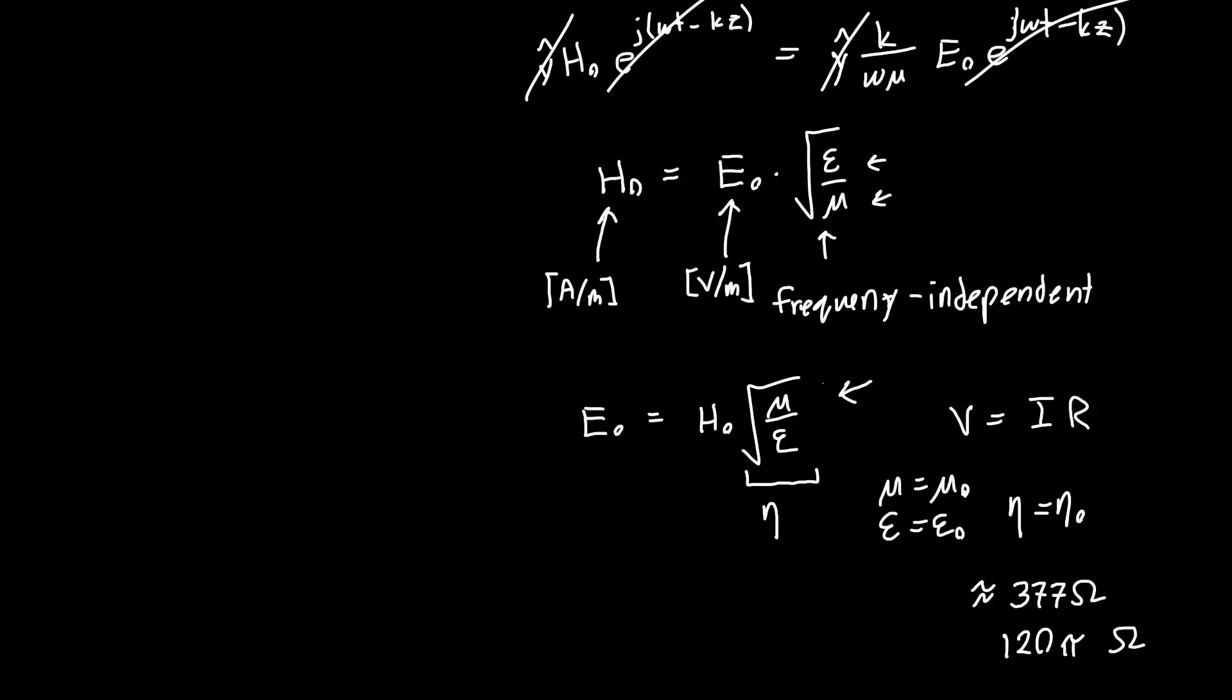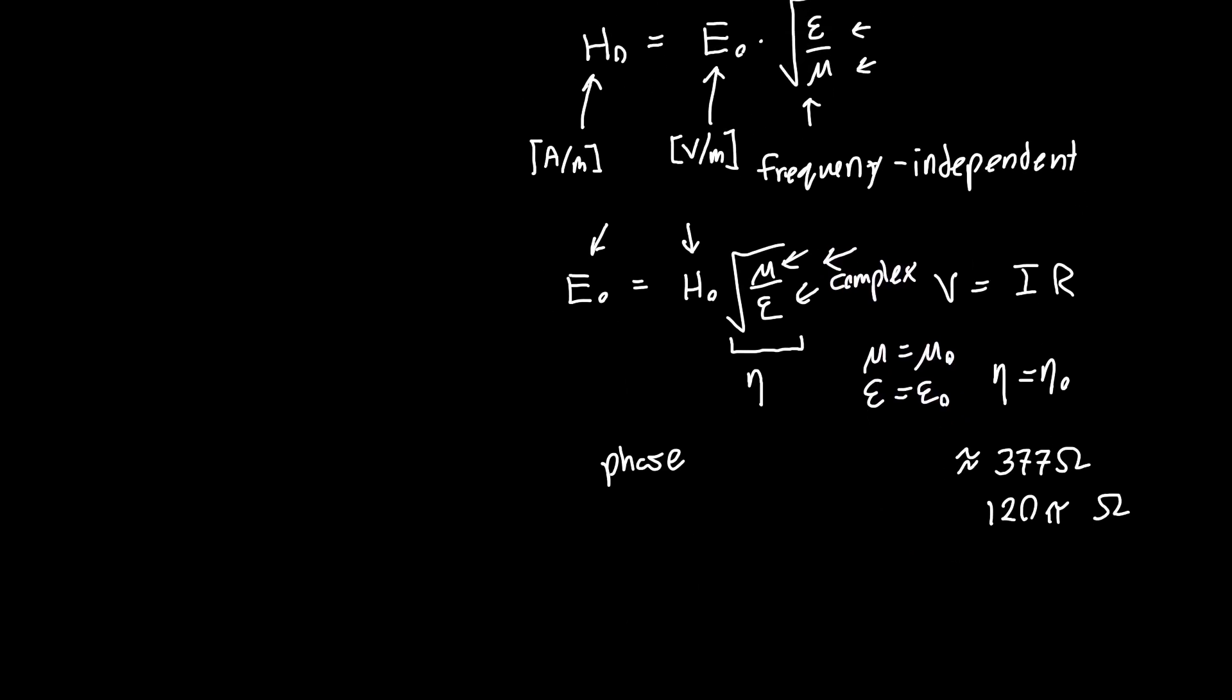Now things start getting really cool when this μ and ε can be complex, because then η describes not only the amplitude relationship between the electric field and the magnetic field, but their phase relationship as well. And so this wave impedance is a super powerful concept in electromagnetics, and it's one that makes life so much easier. Because anytime you've got an electric field amplitude, you can relate it to the magnetic field amplitude just by multiplying by η. Similarly, if you wanted the magnetic field amplitude and you have the electric field amplitude, you just divide by η. And η is only a function of the material.